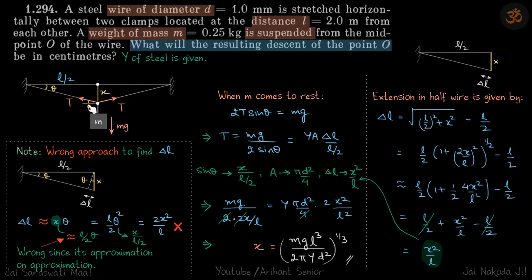The upward force is T sin theta plus T sin theta. So Mg equals 2T sin theta, which gives T equals Mg by 2 sin theta. We're finding T because we need to make use of Young's modulus of steel.